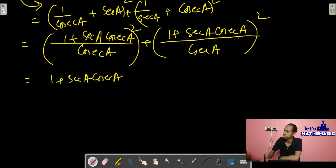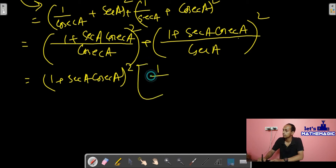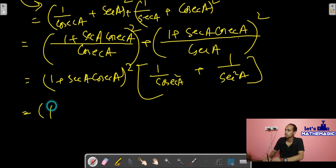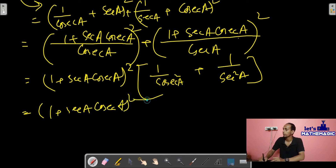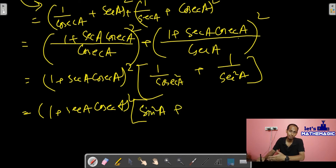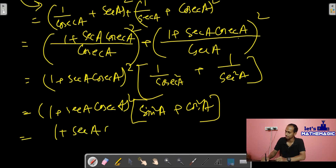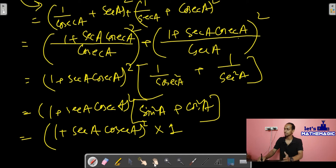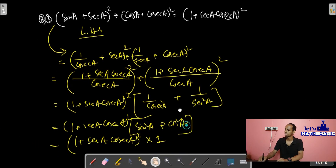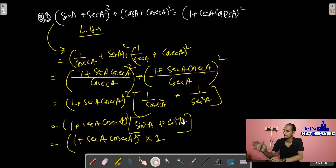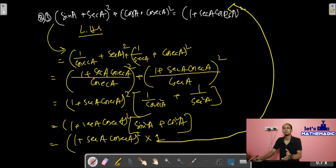We get sec·cosec·x whole square. Checking the second bracket, we get the same thing, and only in the numerator the sec is gone — so one plus sec·cosec whole square. From both parts I'll take common the one plus sec times cosec expression. What's left from the first part is one by cosec² and from the second part one by sec². Now taking the reciprocal: one by cosec means sine, so I get sin²A, and one by sec² means cos²A. Then sin²A plus cos²A = one, so we've got the proof.